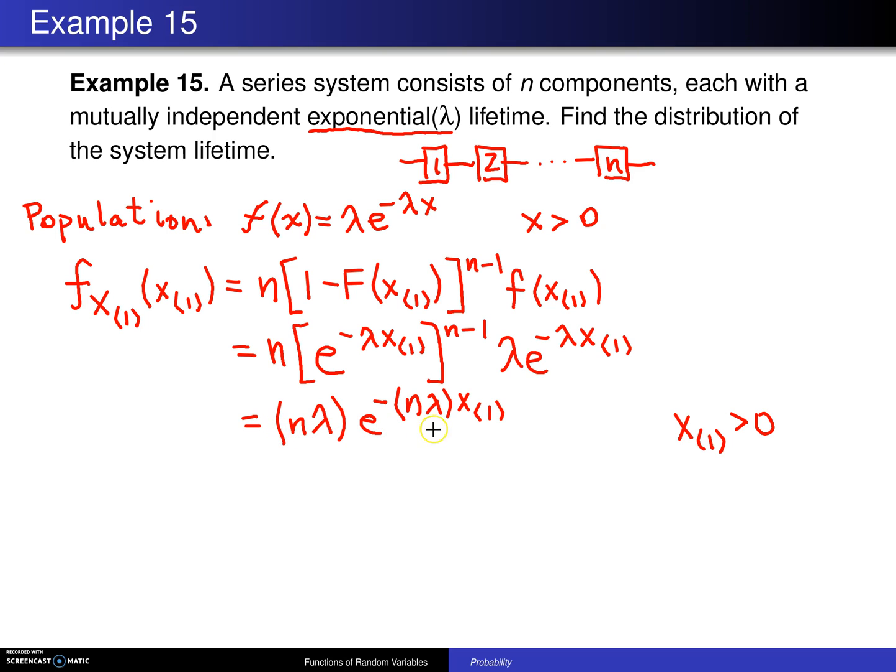If you look at this distribution, it looks like the original one, but everywhere there is a lambda, instead down here there is an n lambda. You can conclude from that that the first order statistic is exponential, and it has a rate parameter which is n lambda.